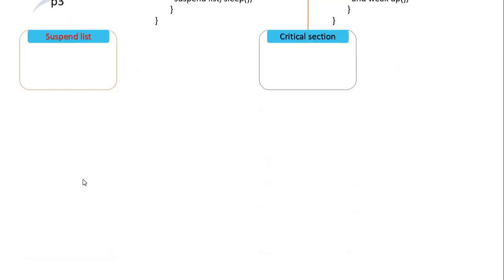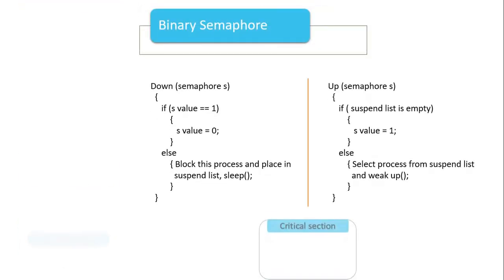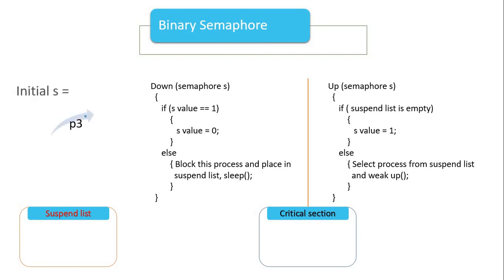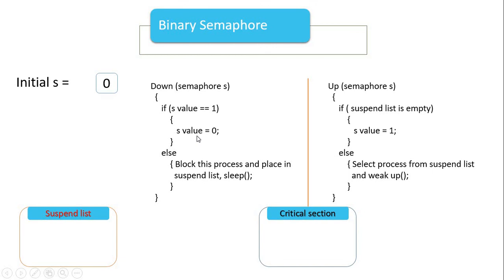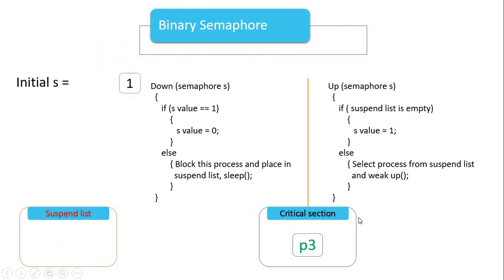If S value is 1, P3 is obviously 1 — it enters the critical section. If S value is 1, P3 can simply enter the critical section. The process checks if S is value 1; if so, the process proceeds. When S becomes 0, the process is in the critical section, and when it finishes, S returns to 1. We will not allow simultaneous critical section use.